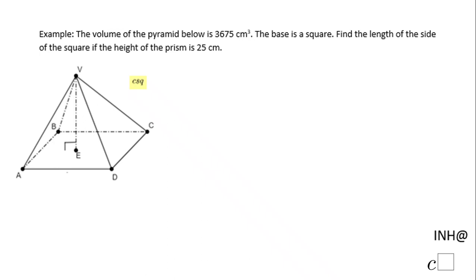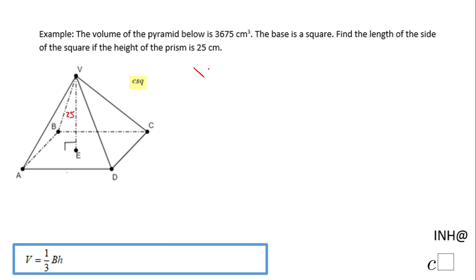Welcome or welcome back to C Square. In this example, we know the volume of the pyramid below is 3675 cubic centimeters. The base is a square and we need to find the length of the side of this square if the height is 25. This height here is 25, and we're going to use this formula: volume equals 1 over 3 times the area of the base times the height.